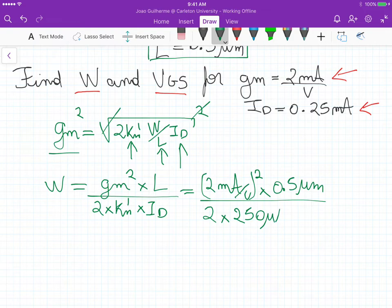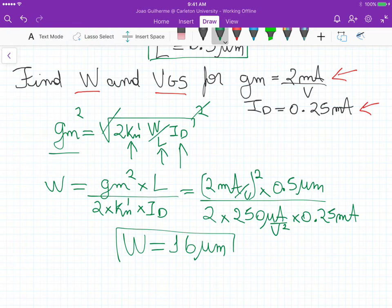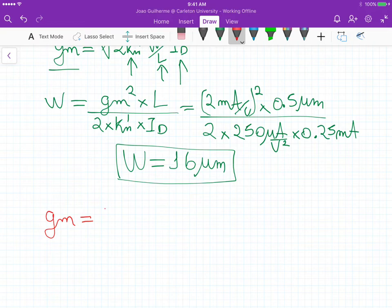process transconductance which is 250 microamps per square volt times the current that is 0.25 milliamps, so this gives us a width of 16 micrometers. Now for VGS, there is another equation for gm for the